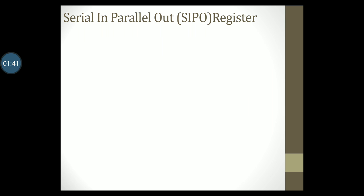Let us demonstrate how this circuit works with an example. Remember that all the flip-flops change state on the same clock pulse. Let Q1, Q2, Q3 and Q4 represent the outputs of the four flip-flops. Let us also record the clock pulse and the input to the shift register.